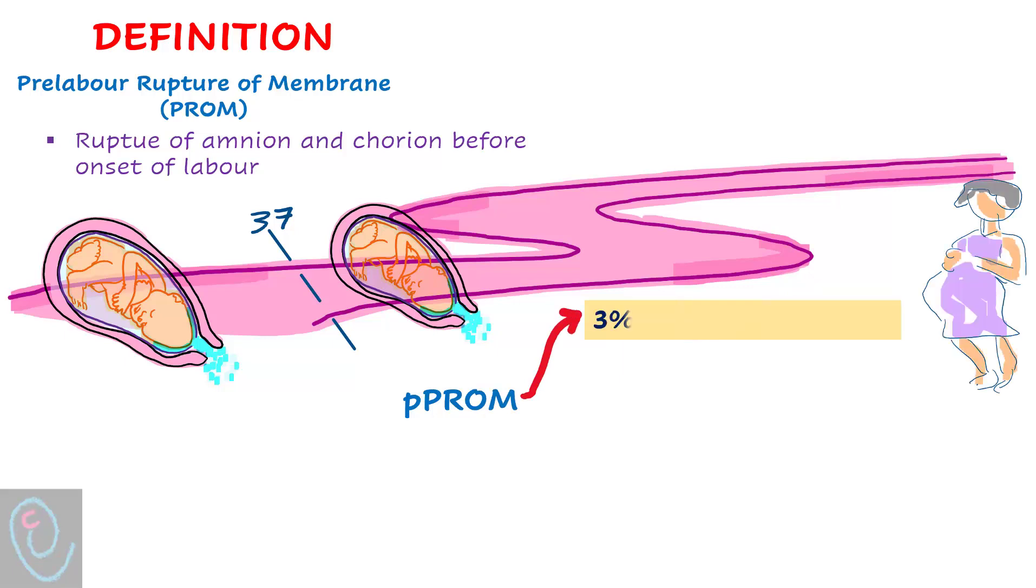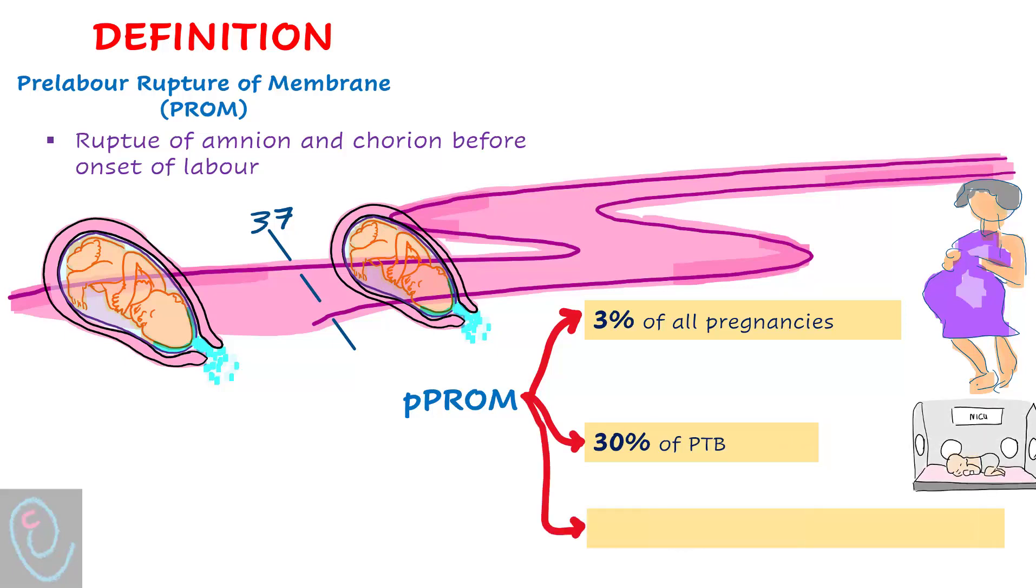Pre-term PROM complicates about 3% of all pregnancies and results in 30% of all pre-term births. The median latency is 7 days. Latency is the time between rupture of membrane and birth.